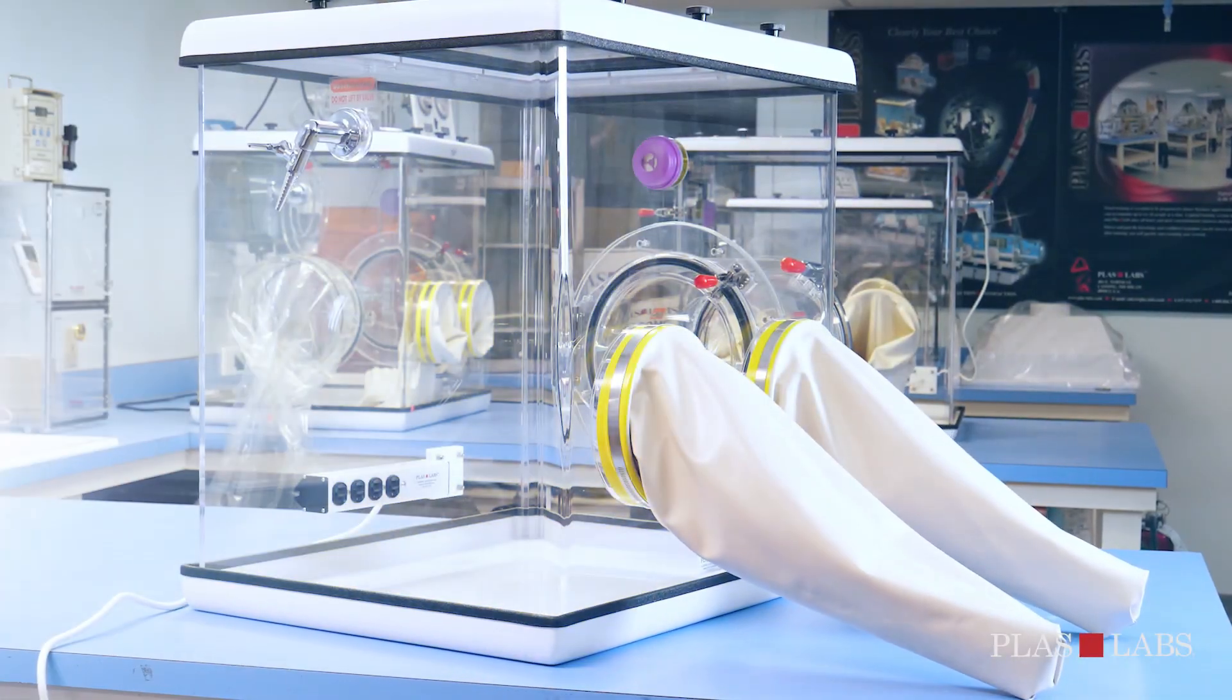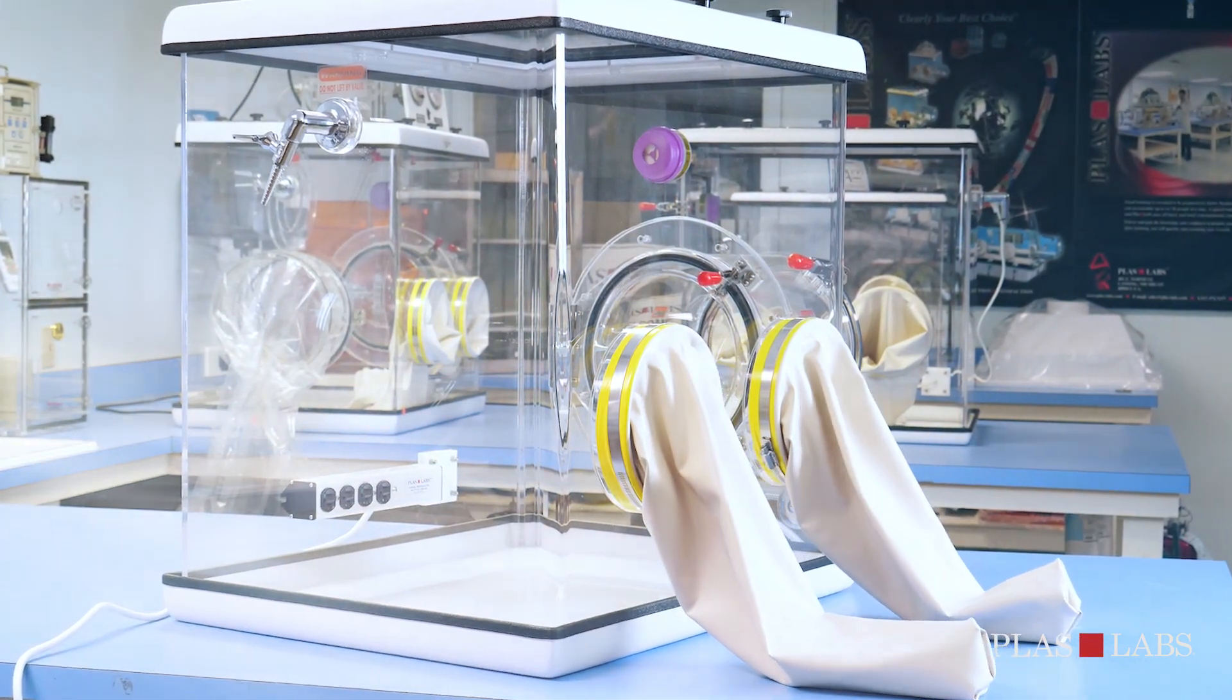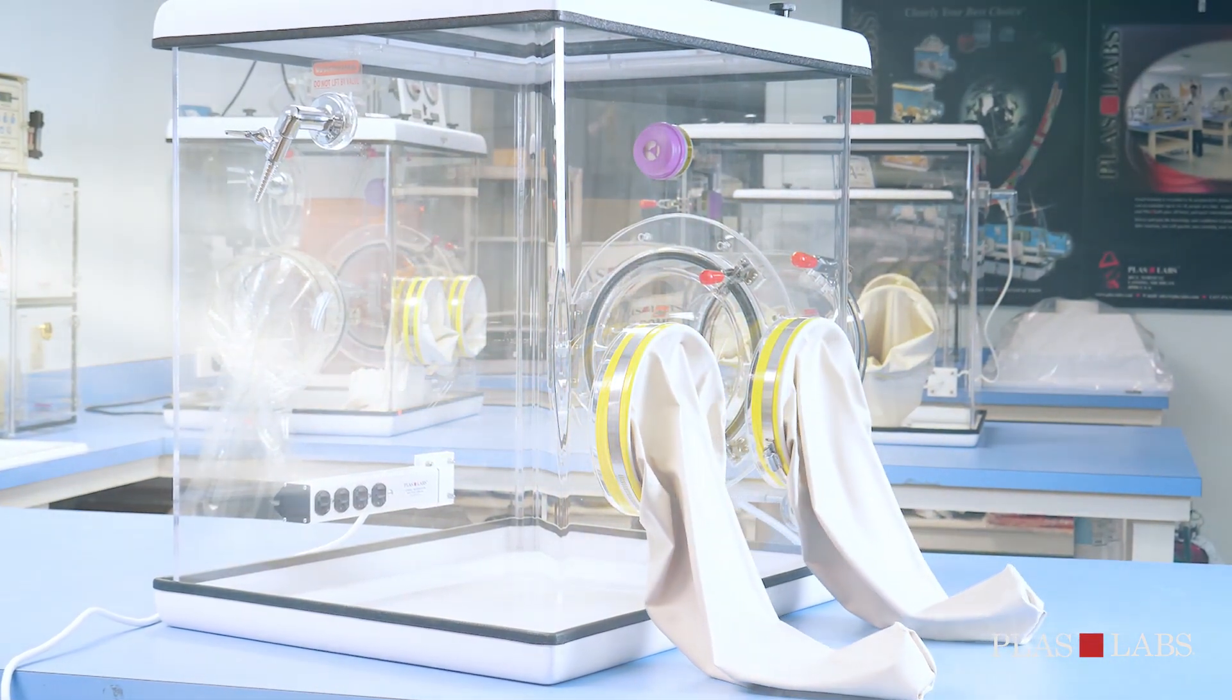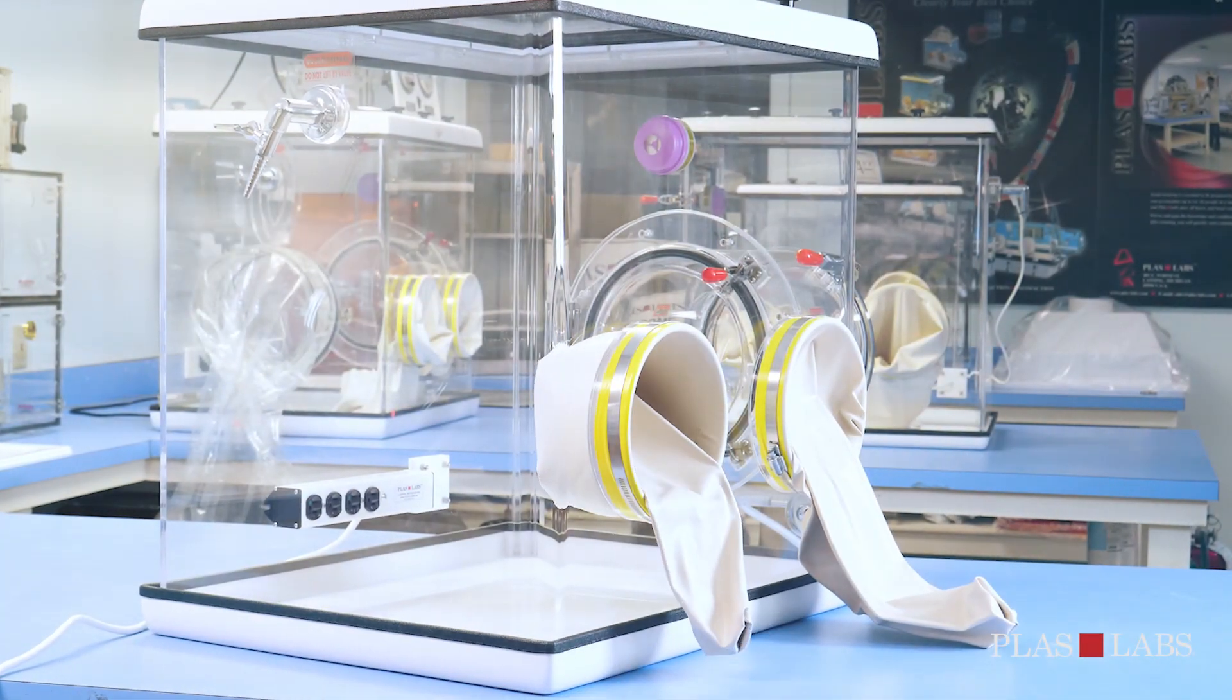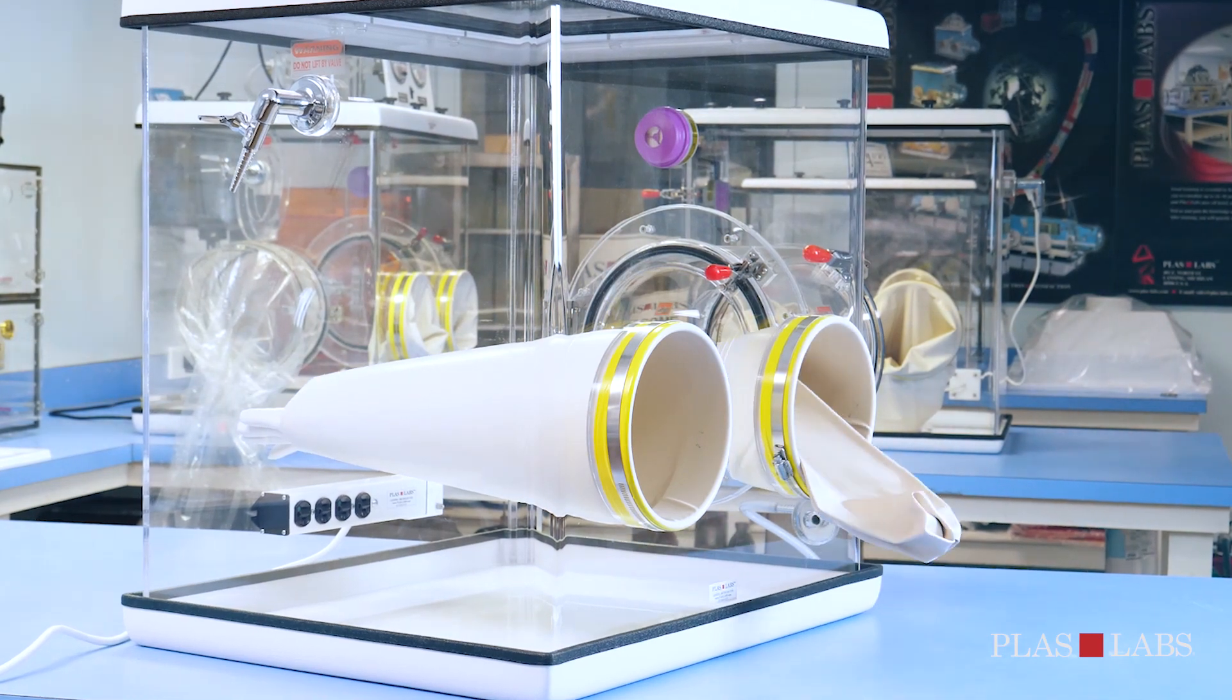The 830 series has been developed to minimize drafts and maximize the effectiveness of your analytical balance. It can also be used with any inert gas to reduce oxygen and moisture levels inside the glove box.